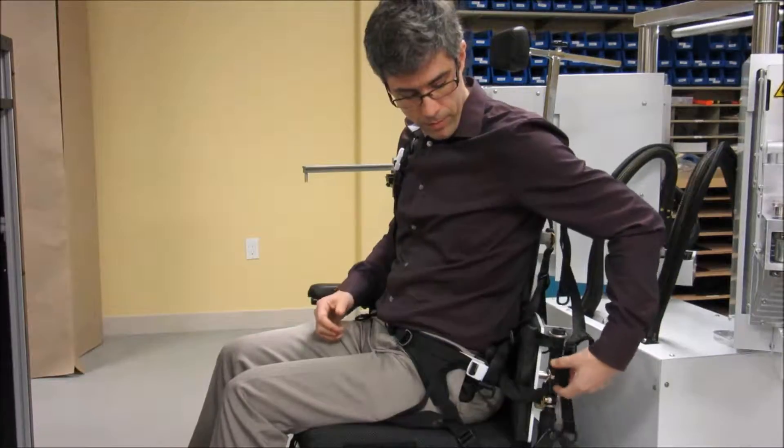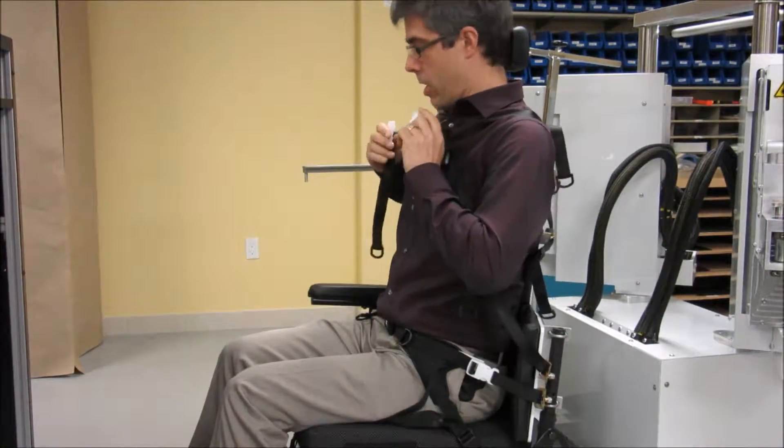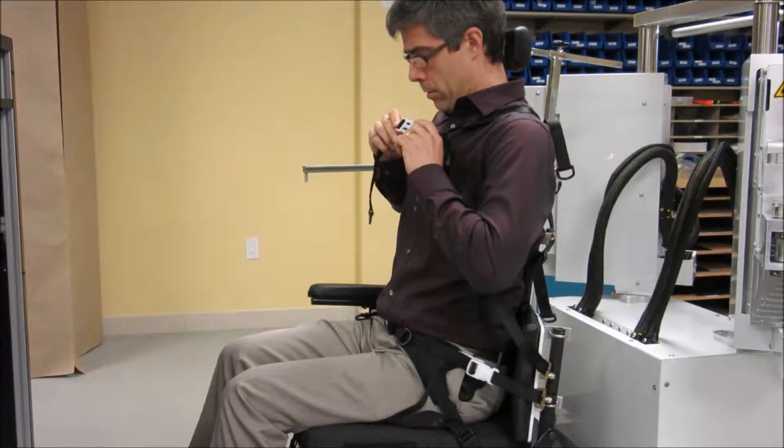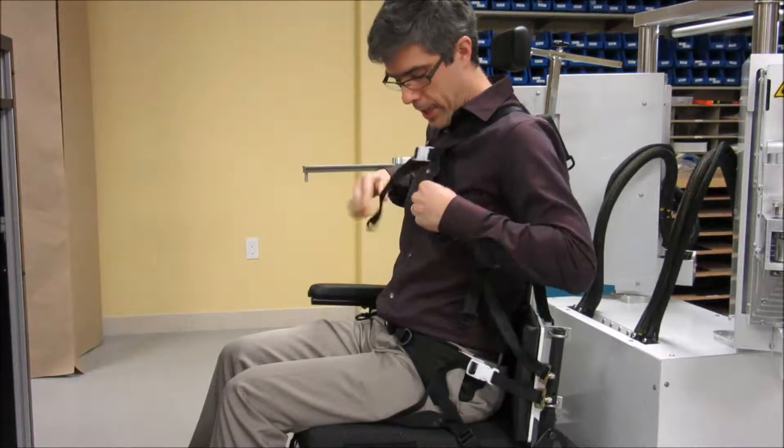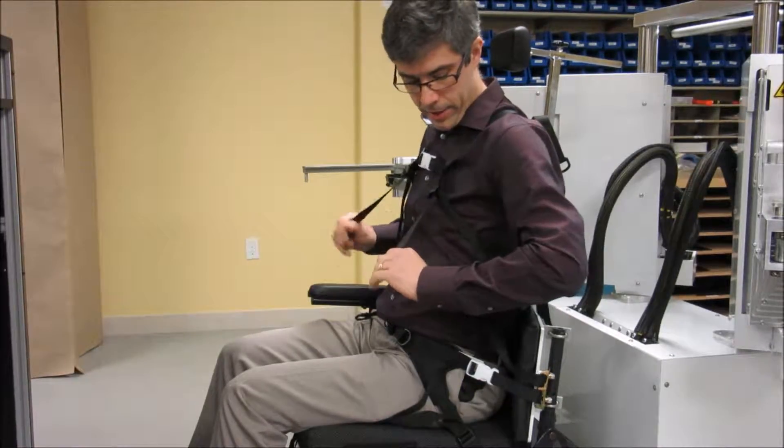If your subject requires upper torso support, the harness can be put on. Their arms slip through, the clips attached and all the various belts tightened as needed.